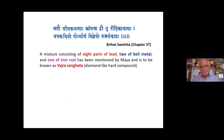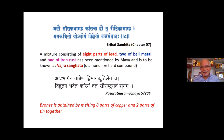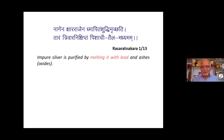A large number of alloys are described. From the Brihat Samhita: a mixture of eight parts of lead, two parts of bell metal, and one part of iron rust — known as Vajrasangata, the diamond-like hard compound. Bronze (Ashtabhage Natamrena) is obtained by melting eight parts of copper with two parts of tin. Processes for purification of metals are also described, many of which are used even today.